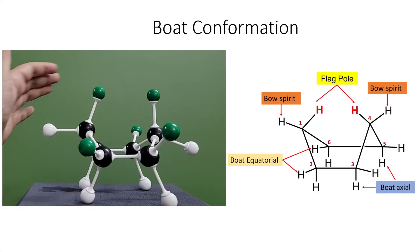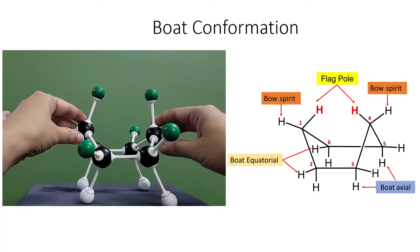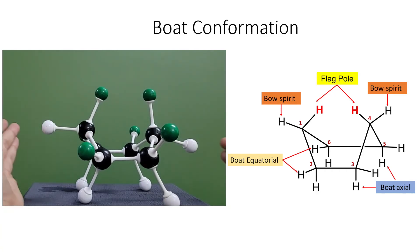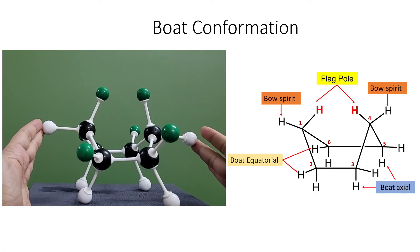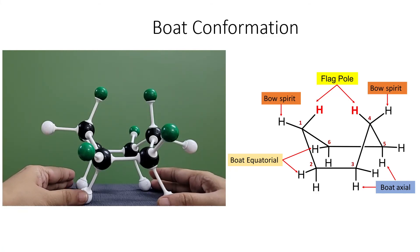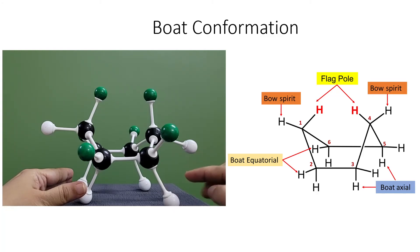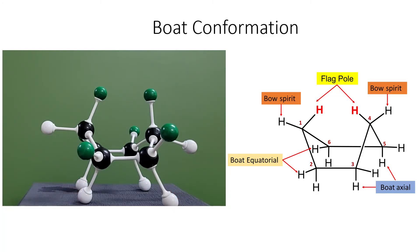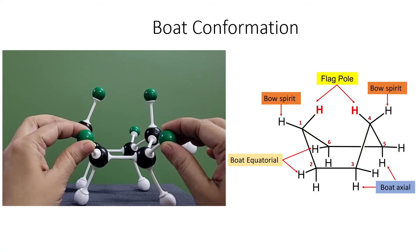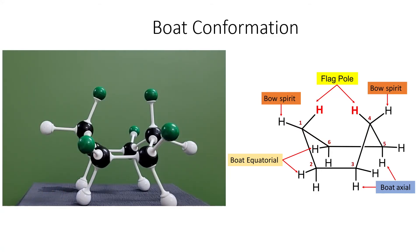Two hydrogens are attached to each carbon. The two hydrogens attached to carbons one and four are called flagpole hydrogens. Similarly, the hydrogens attached to the four remaining carbons — two, three, five, and six — that are perpendicular to the horizontal plane are called boat axial hydrogens, and those parallel to the horizontal plane are called boat equatorial hydrogens.